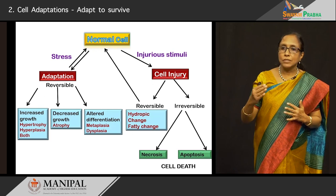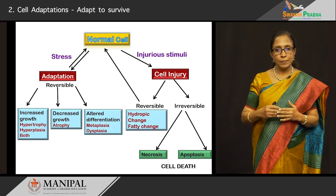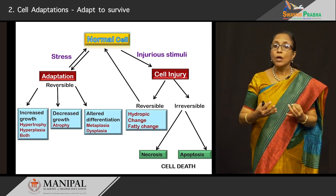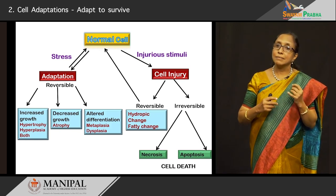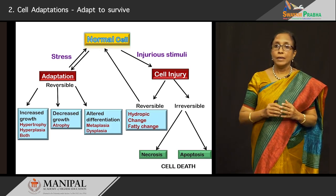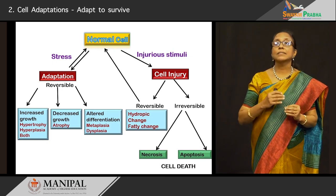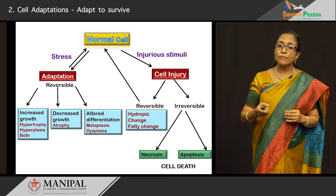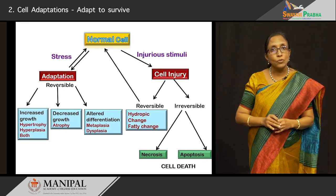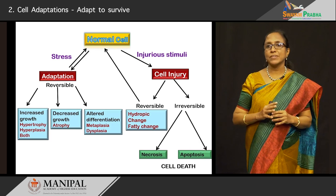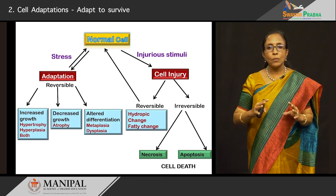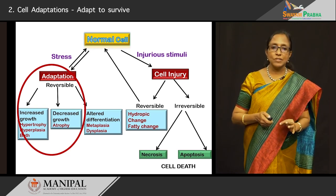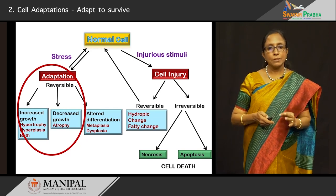That is the way the tissue goes on to specialized functions and alterations in that. Now, if there is an injurious stimuli to that cell — be it an infection, a chemical, some toxin — the cell goes into injury mode. If it is a mild transient injury, certain reversible changes take place such as hydropic change or fatty change. If it is a severe progressive injury, the cell goes on to irreversible cell death, and the two forms of cell death are necrosis and apoptosis. Today, our concentration would be on adaptations, most of which are reversible, and we will be looking at increased growth and decreased growth in various forms.